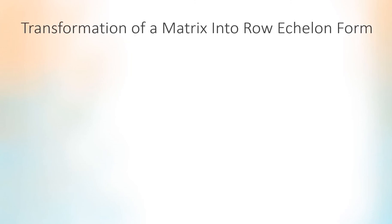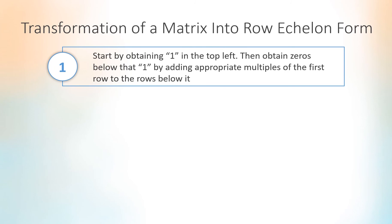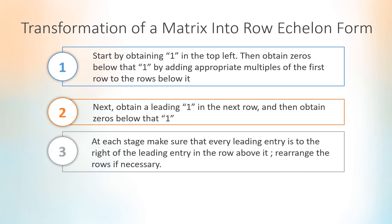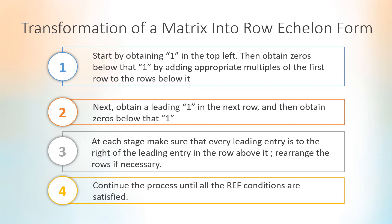In conclusion, to transform a matrix into row echelon form, the steps to be taken are: start by obtaining 1 in the top left. Then obtain zeros below that 1 by adding appropriate multiples of the first row to the rows below it. Next, obtain a leading 1 in the next row and then obtain zeros below that 1. At each stage, make sure that every leading entry is to the right of the leading entry in the row above it. Rearrange the rows if necessary. Continue the process until all the row echelon form conditions are satisfied.